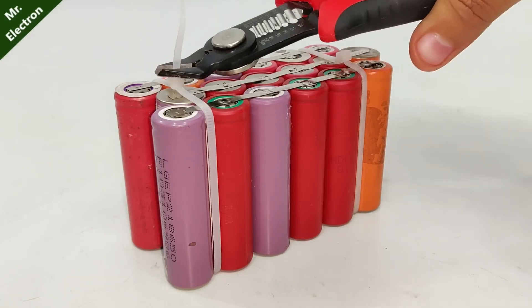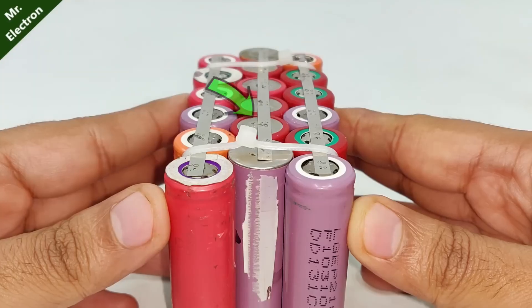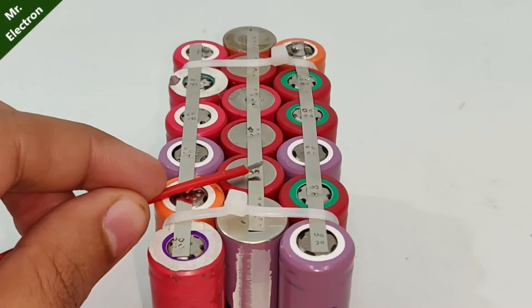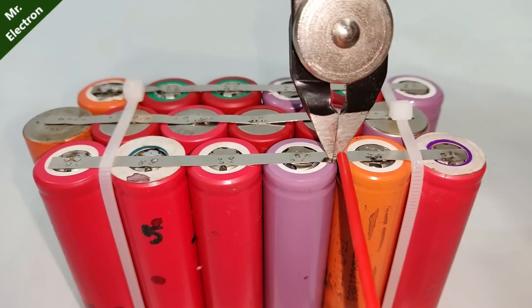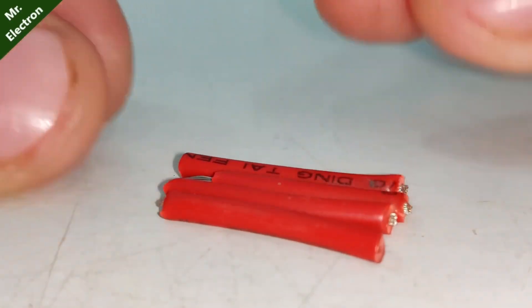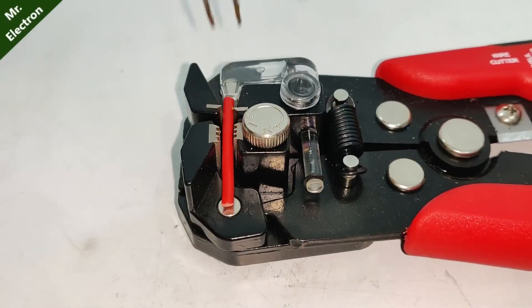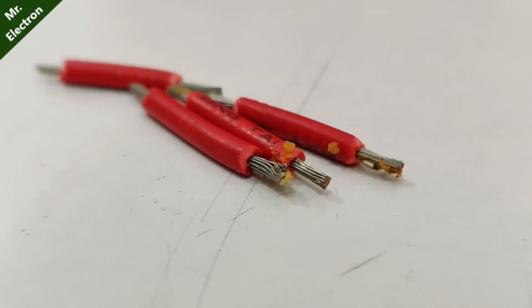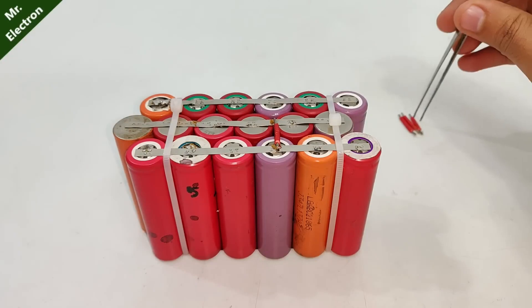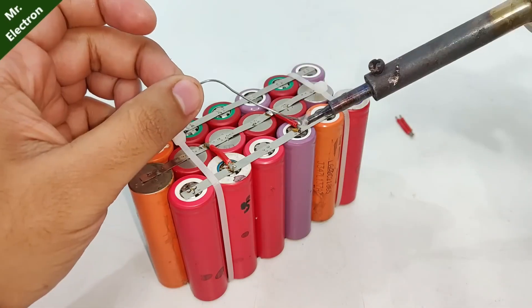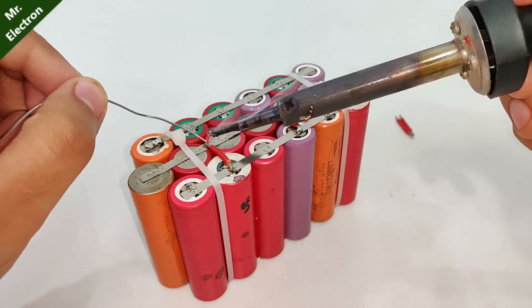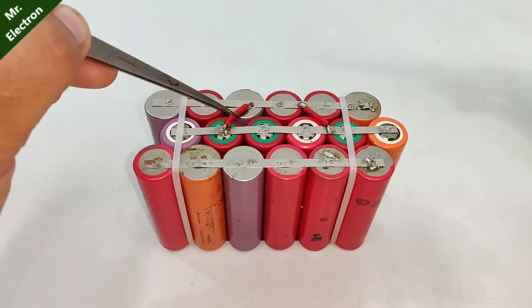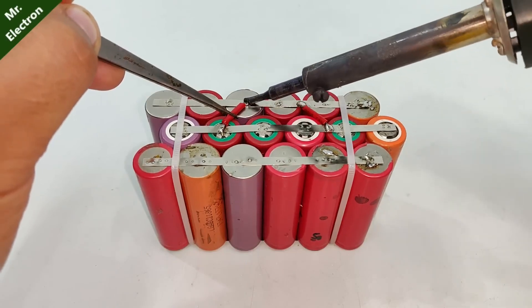Now it is time to do the connections, positive to negative to positive. Step one: take a wire, measure the distance from positive to negative, and cut it in four equal halves. After that, use the wire stripper to strip the ends of your wires and put some flux. Next, take two wires and place them as shown, next solder them.